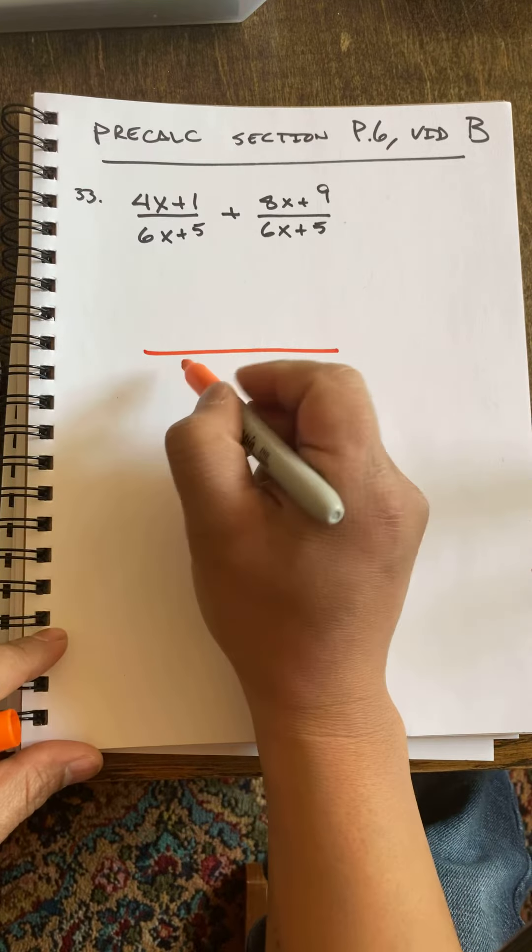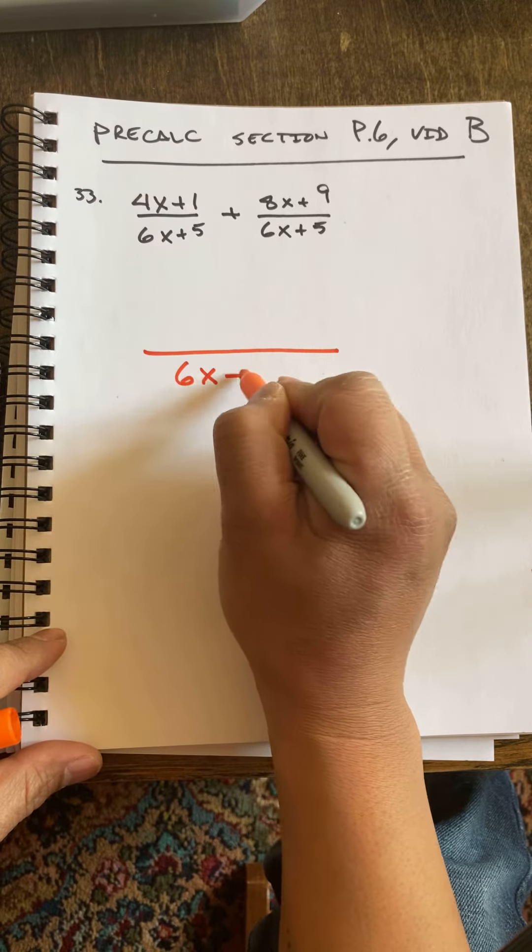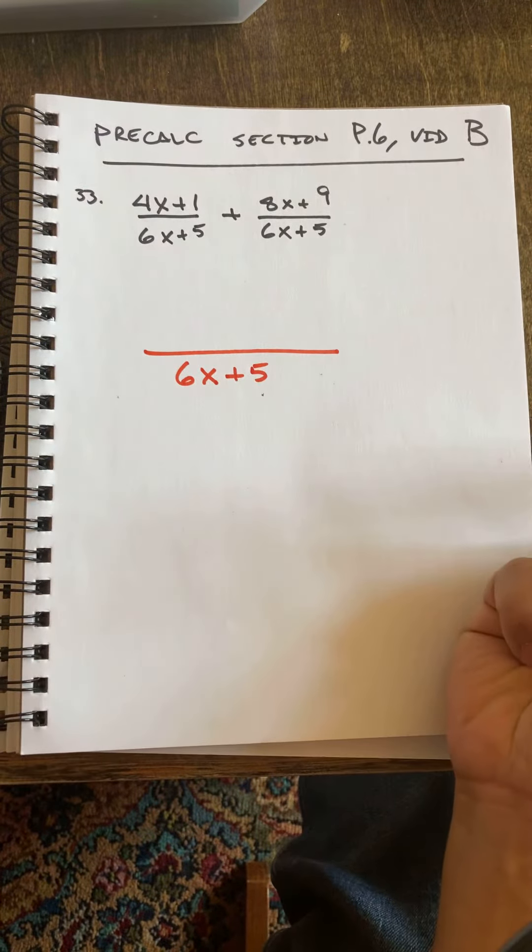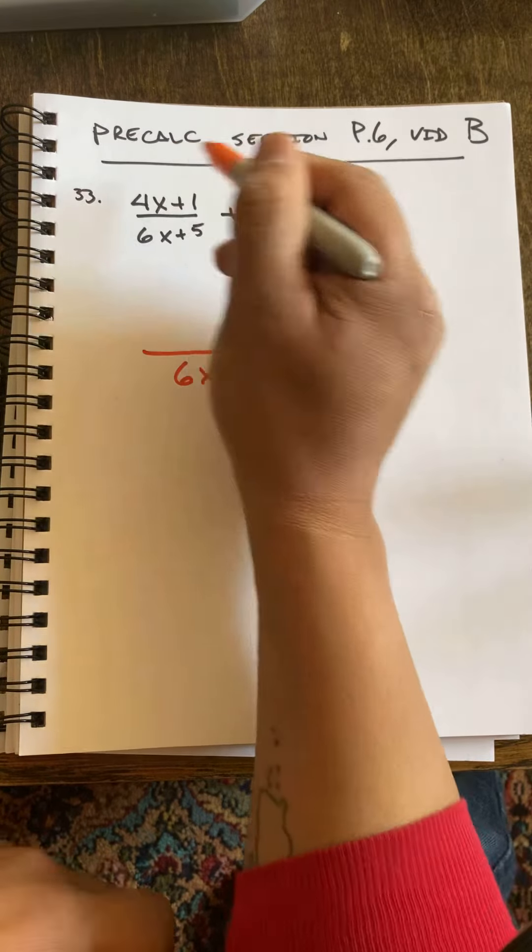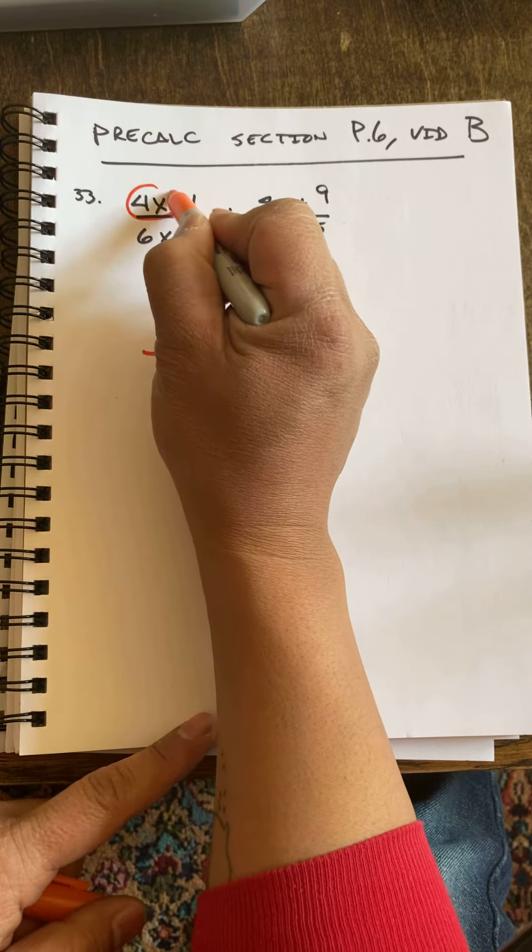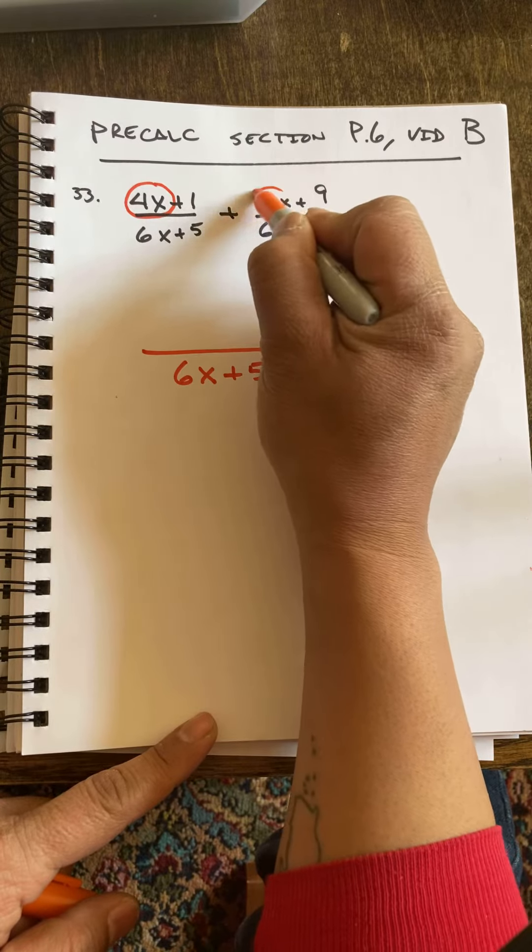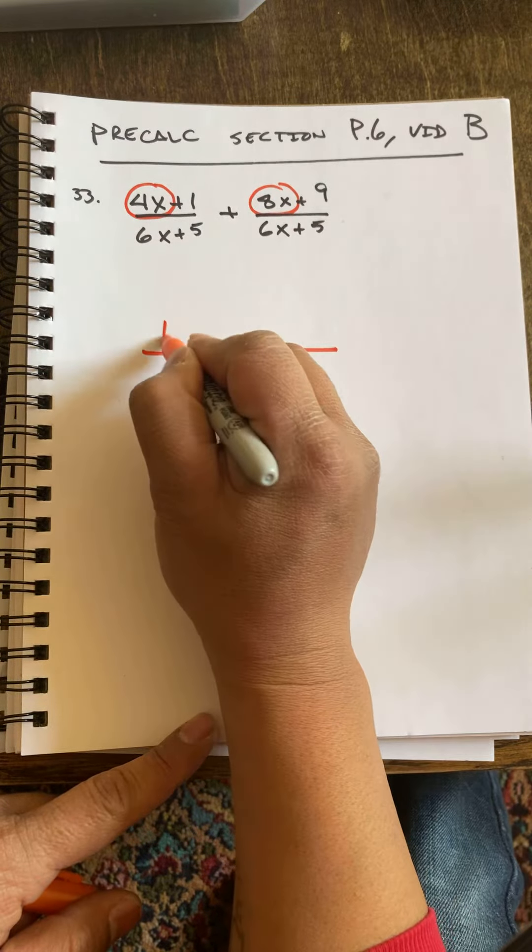I'm just going to keep the common denominator and add the numerators. Of course, 4x plus positive 8x, that's 12x right there,